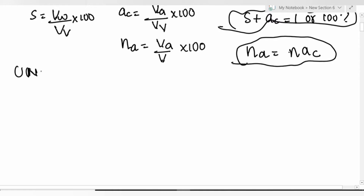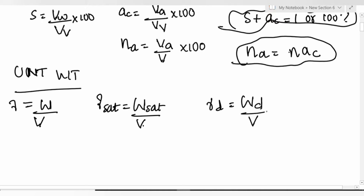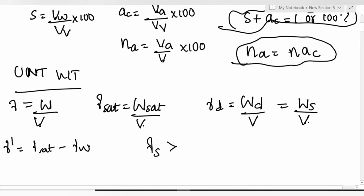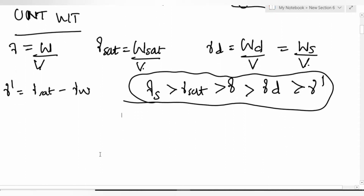For unit weight, we study three cases: partially saturated, fully saturated, and dry. Gamma (bulk) = weight divided by volume. Gamma saturated = W_saturated / V. Gamma dry = weight of dry soil divided by total volume, also written as weight of solids divided by V. Submerged unit weight = gamma_saturated minus gamma_w. The order is: gamma_solids > gamma_saturated > gamma > gamma_d > gamma_submerged.